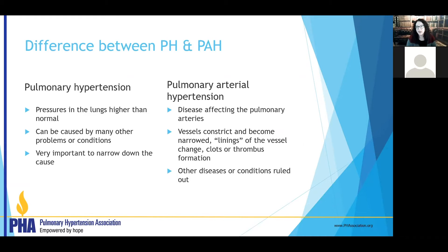Pulmonary arterial hypertension is blood vessel disease in the lungs. Those blood vessels are constricted and the lining is narrowed. It's becoming harder and harder for blood to flow through those small vessels, and that causes stress and strain on the right side of the heart. We have to look at this whole picture and figure out the whys so we know how to best treat you.